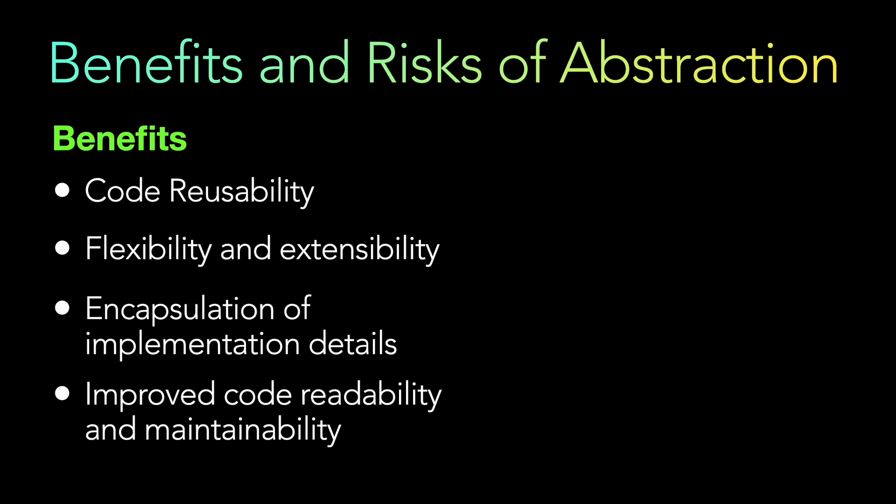Now let's look at the risks, because there are some. In my day-to-day experience, I've seen these things occur and we want to avoid them — especially if you want to be a good software engineer or are in an interview. The first risk is increased complexity. Adding an extra layer of abstraction can make things harder to understand, specifically for junior developers, especially in large codebases like a fintech application, a social network, or a search engine, where there can be many contracts, interfaces, and abstract classes that may be difficult to navigate.